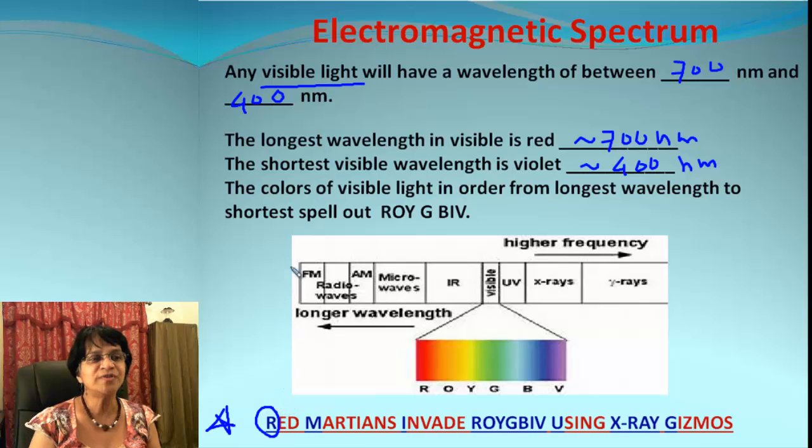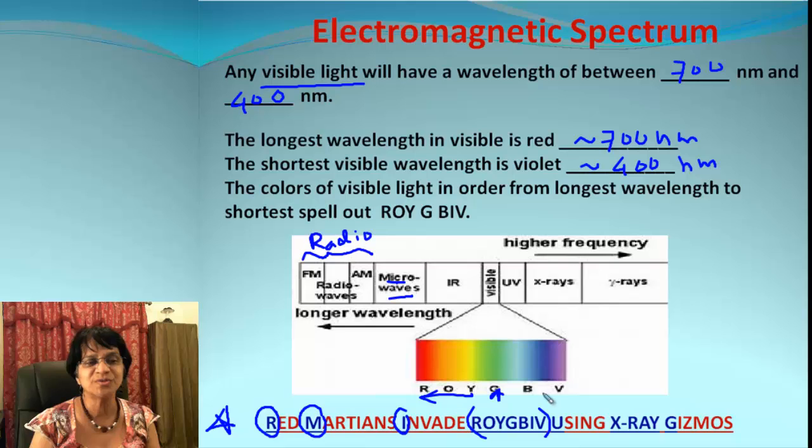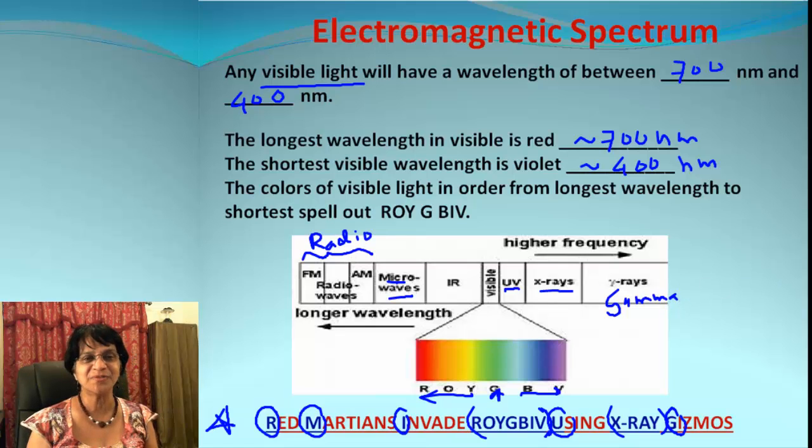First is red—what do we have here beginning with radio? And of course radio could be AM and FM both. Next one is M for microwaves. We have invade—invade stands for IR. Then we have ROYGBIV wave, which is simply the visible range. Next one is U for UV. After that it's X-ray, and then we have gizmos G, which is gamma rays.